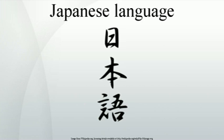Japanese has no genealogical relationship with Chinese, but it makes extensive use of Chinese characters, or kanji, in its writing system, and a large portion of its vocabulary is borrowed from Chinese. Along with kanji, the Japanese writing system primarily uses two syllabic or moraic scripts, hiragana and katakana. Latin script is used in a limited way, such as for imported acronyms, and the numeral system uses mostly Arabic numerals, alongside traditional Chinese numerals.